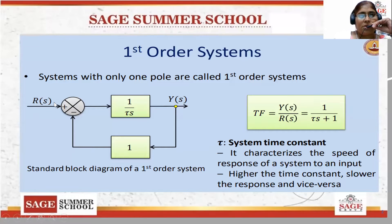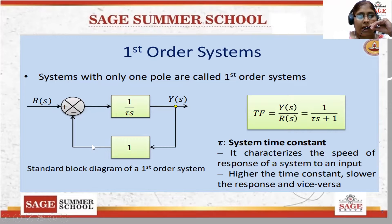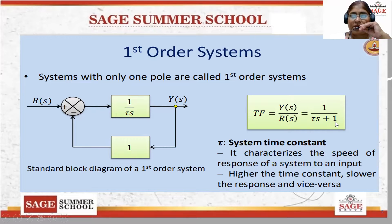As you can see here, this is the control system. R(S) is the input, Y(S) is the output. 1 by tau·S is the transfer function of the forward path, and 1 is the transfer function of the feedback path — unity feedback is provided here. The transfer function is the ratio of output divided by input, Y(S) upon R(S), which equals 1 by (tau·S + 1), where tau is the system time constant and characterizes the speed of the response.